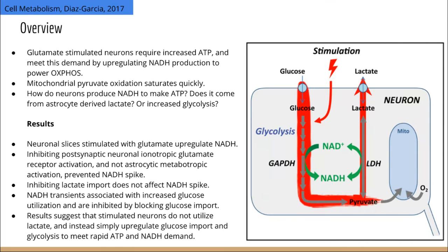Furthermore, the nail in the coffin came from experiments looking at the effect of inhibiting lactate import, which did not affect NADH transients. Inhibiting the MCT lactate transporter or lactate dehydrogenase had no effect on NADH transients. Instead, they observed that increased neuronal glycolysis and glucose utilization was fueling the NADH transients. These results collectively suggest that stimulated neurons do not utilize lactate; instead, they simply upregulate glucose import and glycolysis to meet increased ATP and NADH demand.